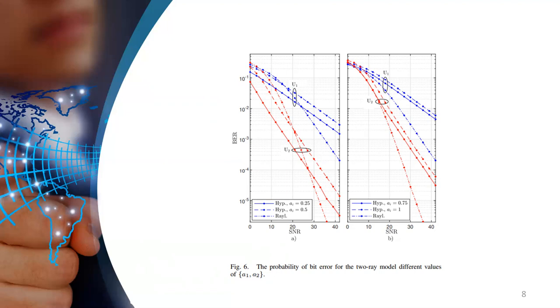there's a big difference between the bit error rate performance between hyper-Rayleigh and the standard Rayleigh channel. And in this simulation, we consider the two-ray model or hyper-Rayleigh channel with number of scatterers equals two.